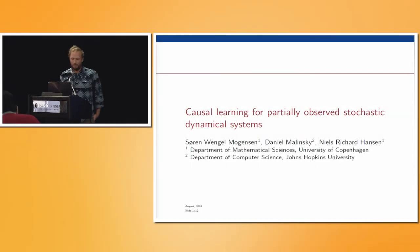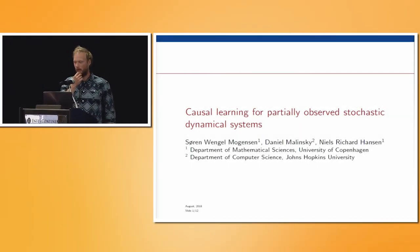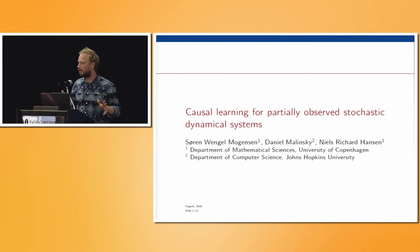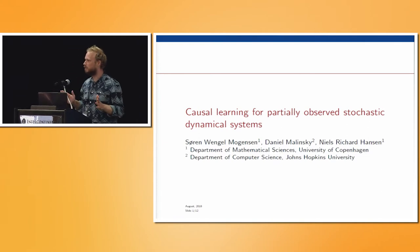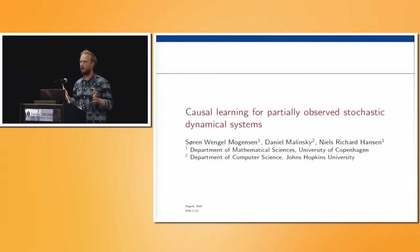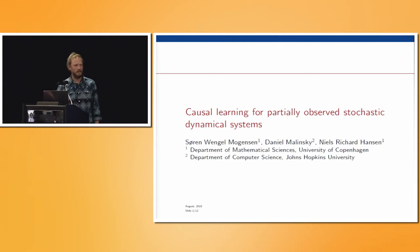All right, hi. I'm going to be addressing the following problem. We observe some data from some stochastic dynamical system, and the systems we have in mind are continuous time stochastic processes. Can we then learn a graph that represents and describes the independence structure of the system? Of course, this is a classical problem if we are considering systems of random variables. The new thing is really to be considering stochastic processes.